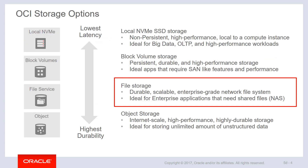Looking at the matrix of different storage options, file storage service falls somewhere in between lowest latency and highest durability. The file storage service is a durable, scalable, enterprise-grade network file system, and is ideal for enterprise applications that need to share files across multiple compute resources. Keeping in mind that a block volume currently can be attached to one compute resource at a time, but in situations where an application requires shared storage across multiple compute resources, FSS makes an ideal solution.